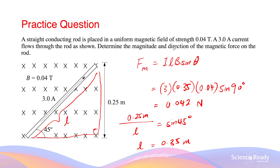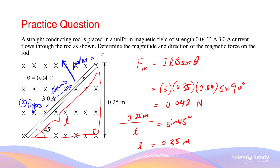The direction of the force can be worked out using the right-hand palm rule. Your thumb will be going in a diagonal direction towards the top right, in the same direction as the conventional current. Your fingers will be pointing into the screen, because this is where the magnetic field lines are going. By doing this, your palm should be facing towards the top left, and this is the direction of your force. So our final answer is 0.042 newtons towards the top left.